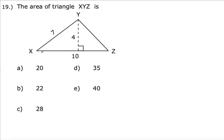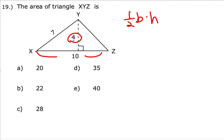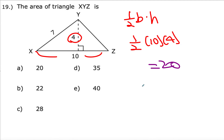Let's look at number 19. Area equals one-half base times height. If base equals 10, the height — something perpendicular to the base — is 4. So we get one-half times 10 times 4. That's one-half of 40, which equals 20. So 20 is the answer.